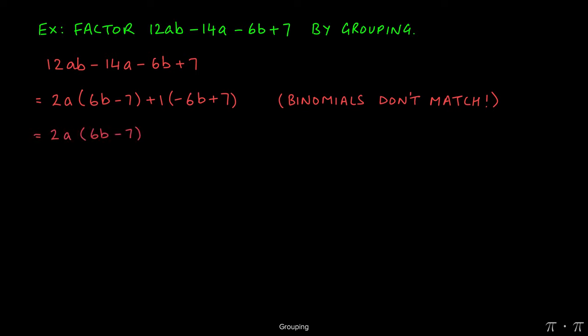We rectify this by factoring out a negative 1 instead. And when we do, dividing negative 6b by negative 1 gives us a positive 6b, and then dividing 7 by negative 1 yields a negative 7.